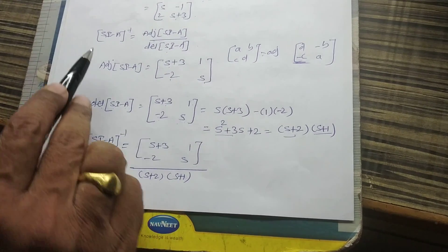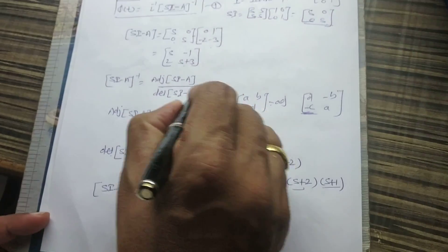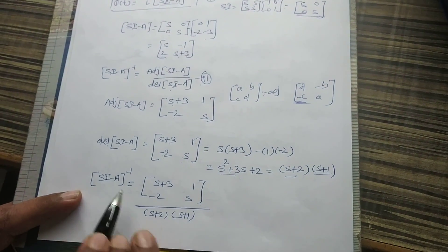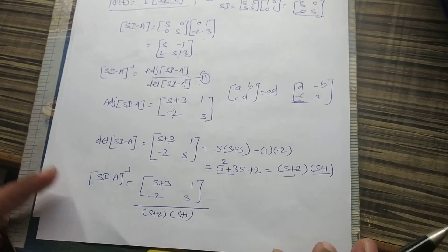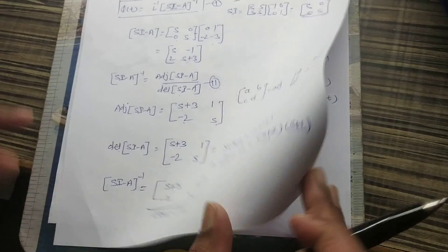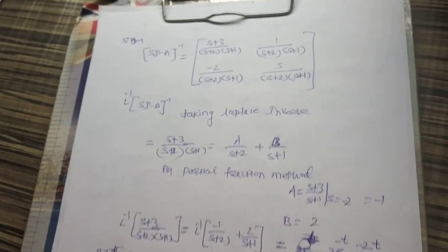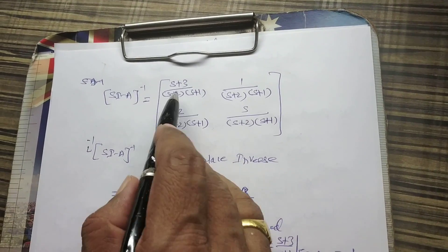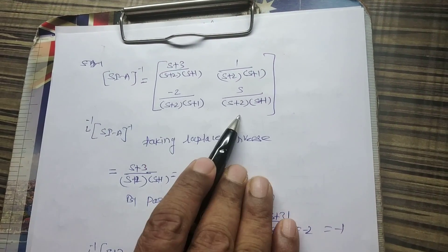So (sI - A) inverse equals the adjunct divided by the determinant, which gives us the matrix [s+3, 1; -2, s] all divided by (s+1)(s+2). Our next step is to find the Laplace inverse of (sI - A) inverse.